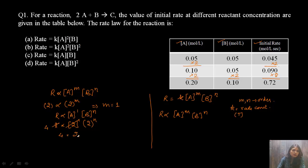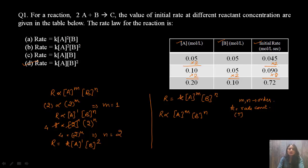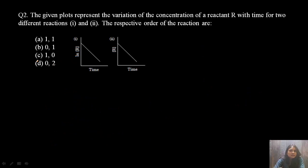Solving this: 8 divided by 2 (from [A] doubling) gives 4 = 2^N, so N = 2. Our rate law becomes R = K[A]^1 [B]^2. That means option D is the correct answer. This is the easiest question from this chapter.